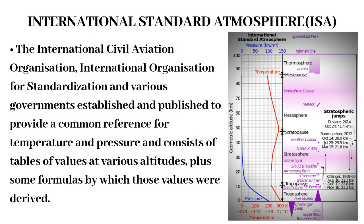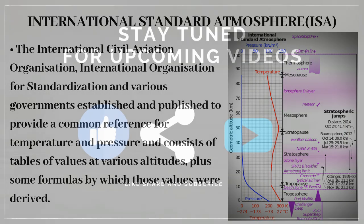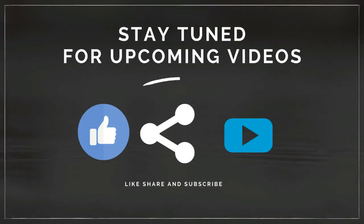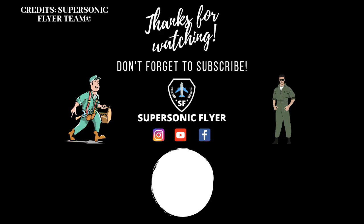Coming to the last topic — the International Standard Atmosphere. The atmosphere is never at rest; pressure, temperature, humidity, and density are continuously changing. To avoid confusion, the International Civil Aviation Organization (ICAO), the International Organization for Standardization (ISO), and various governments established and published standard values of temperature, pressure, and density. These values are known as the International Standard Atmosphere.